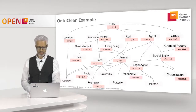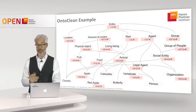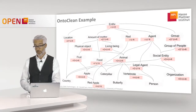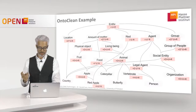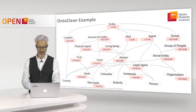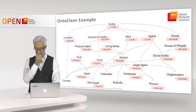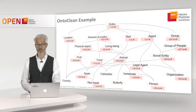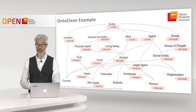For 'vertebrate' as a subclass of animal: it inherits the identity criterion — such as the species name — and vertebrates are considered a whole (plus U) and rigid. For 'person': persons have individual names, so it is plus O. The rest should be obvious: plus U and plus R.